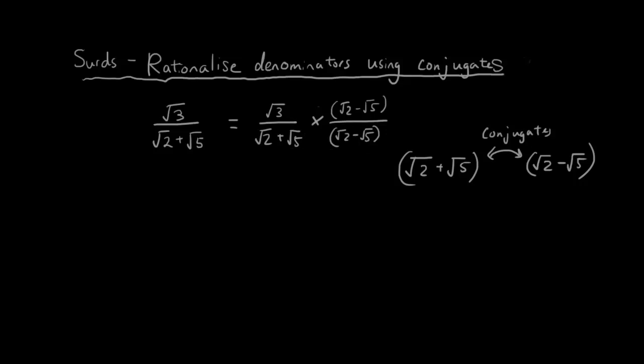So now what we can do is simply use the binomial expansion technique. So you guys remember how to use the distributive law. Let's combine it all first into one big fraction. So we have square root of 3 times square root of 2 minus square root of 5 over square root of 2 plus square root of 5 bracket square root of 2 minus square root of 5.